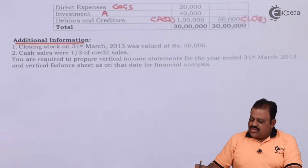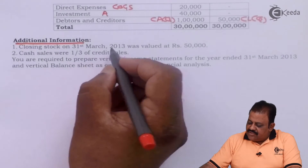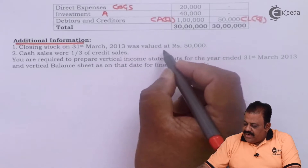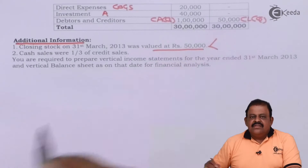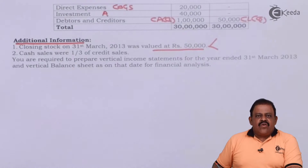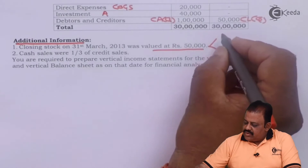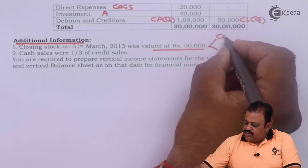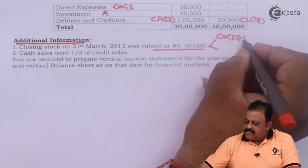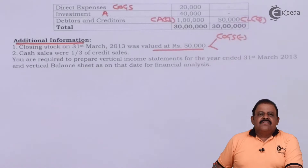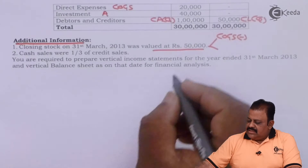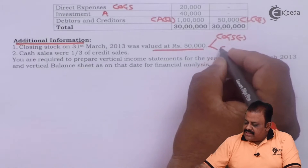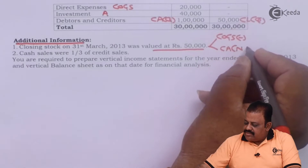Additional information: closing stock as on 31st March was valued at rupees 50,000. This will be recorded in the income statement under cost of goods sold — we have to minus this. The second effect is it will be recorded as a current asset, non-quick.